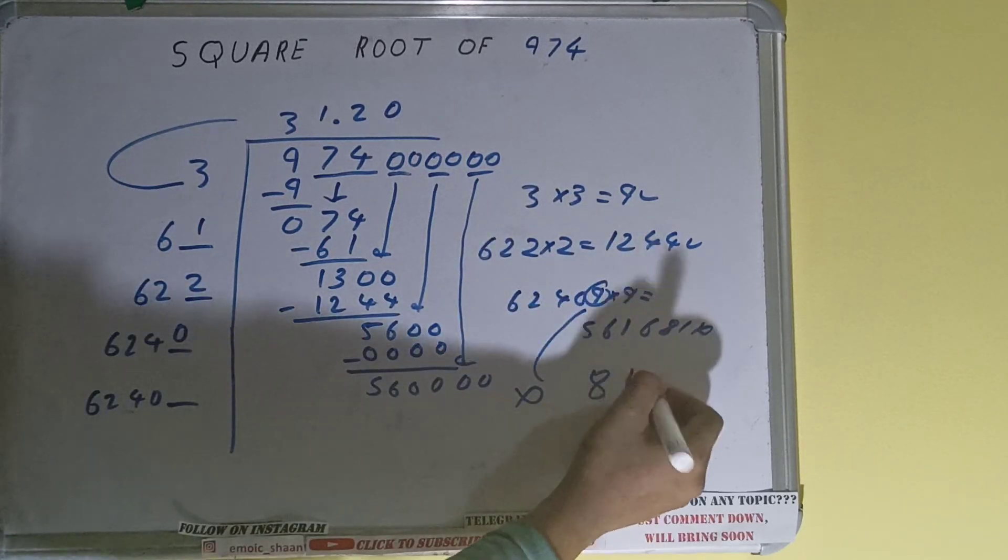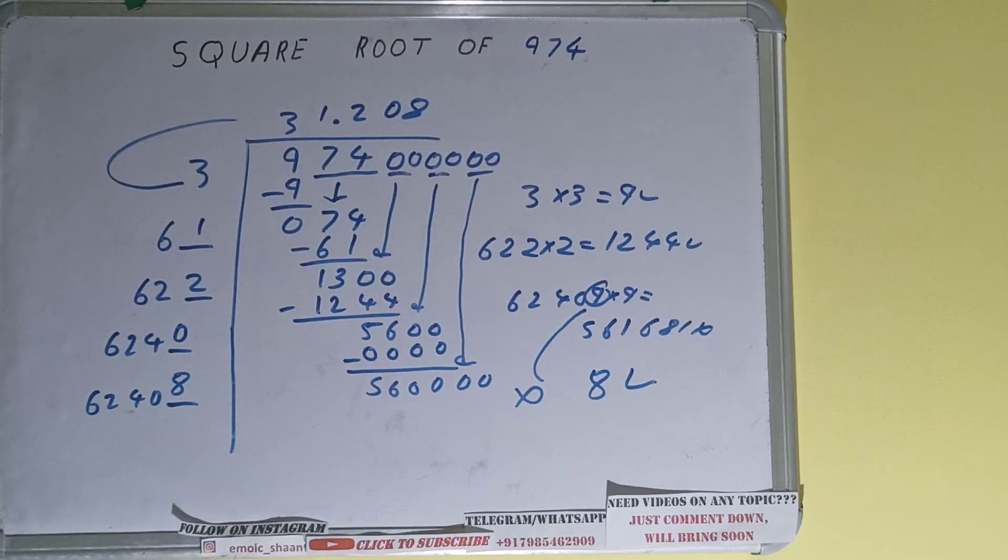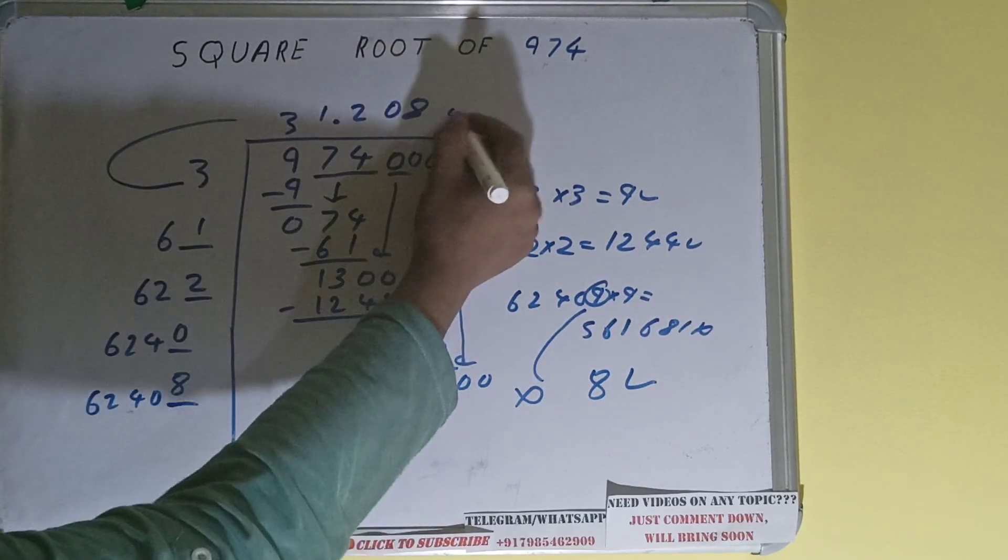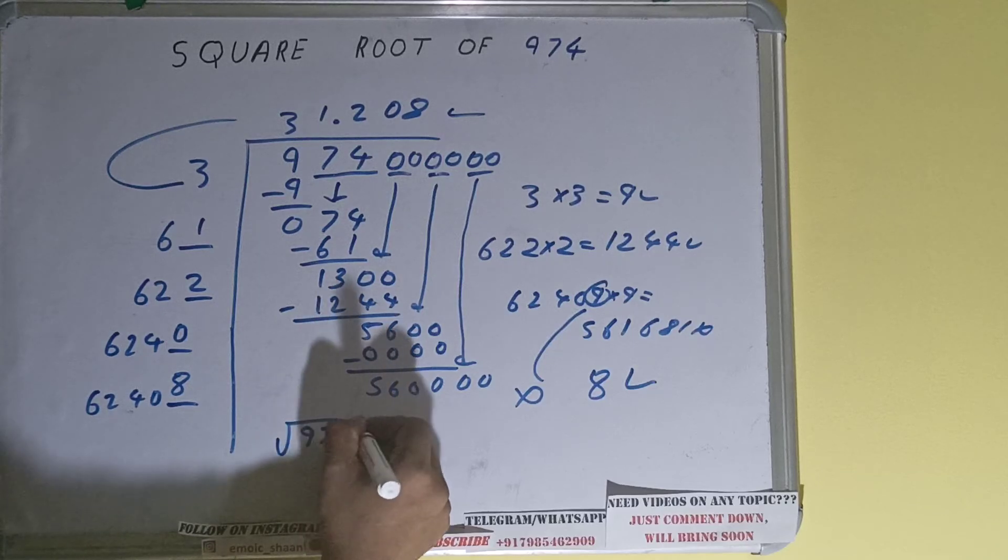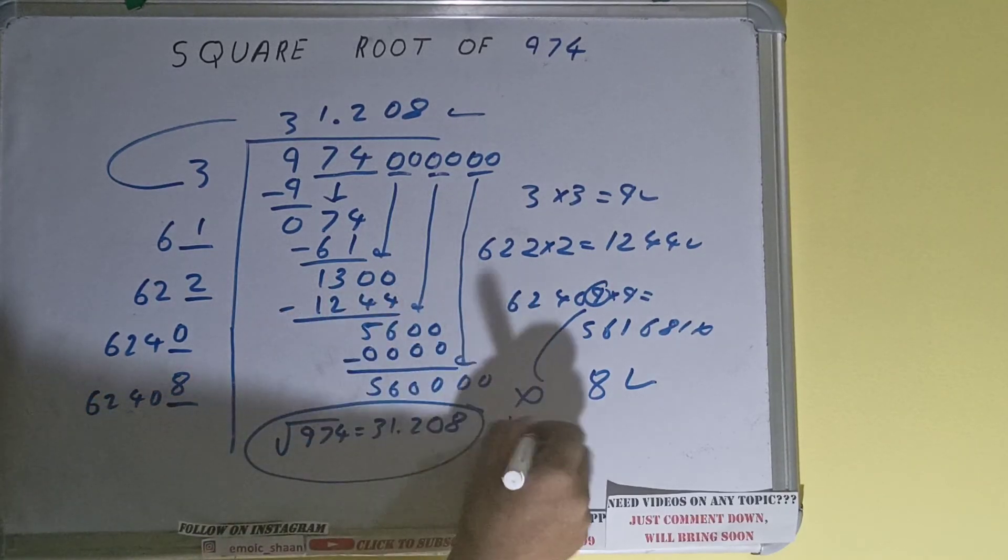So 8 here and 8 here, but we don't need to calculate because we got the answer correct up to 3 decimal places. So square root of 974 will be 31.208, and that will be the answer.